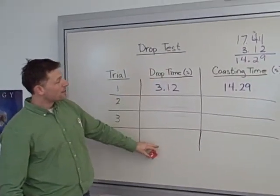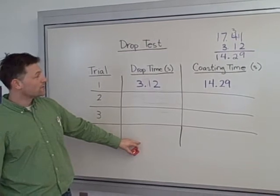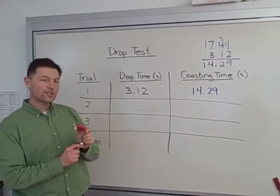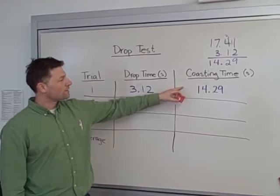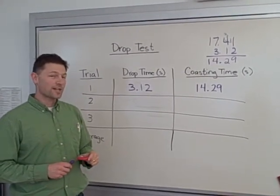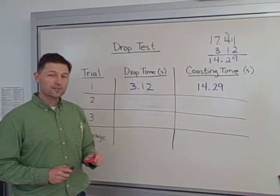The drop time tells you something about the rotational inertia of the wheels. And the coasting time tells you how much friction you have. You want a very long coasting time that shows you have less friction in your wheels and axles. And that's the drop test. Thank you.